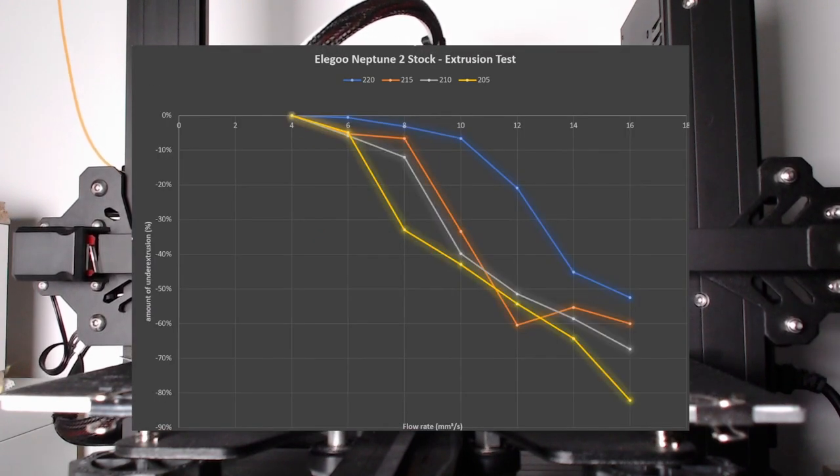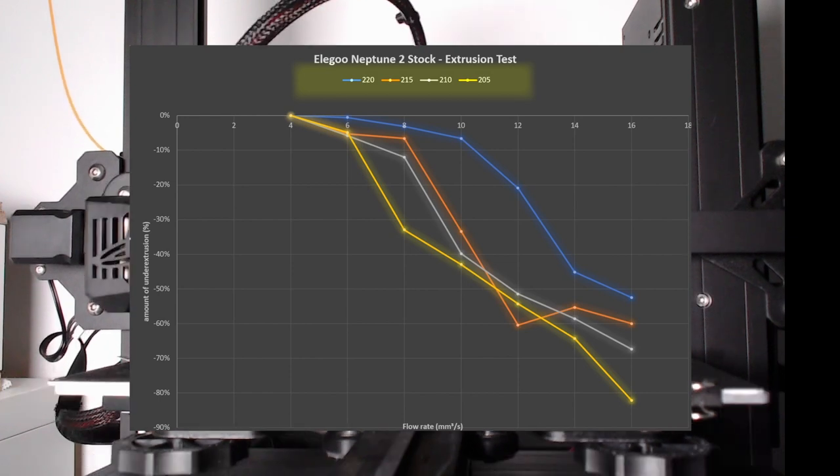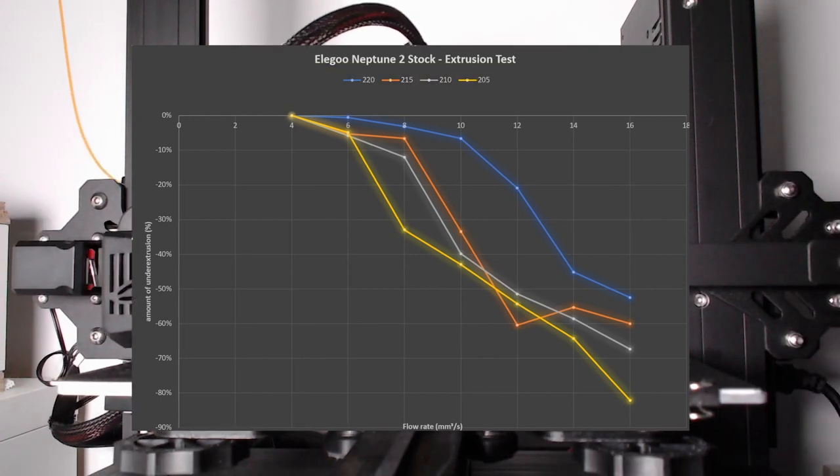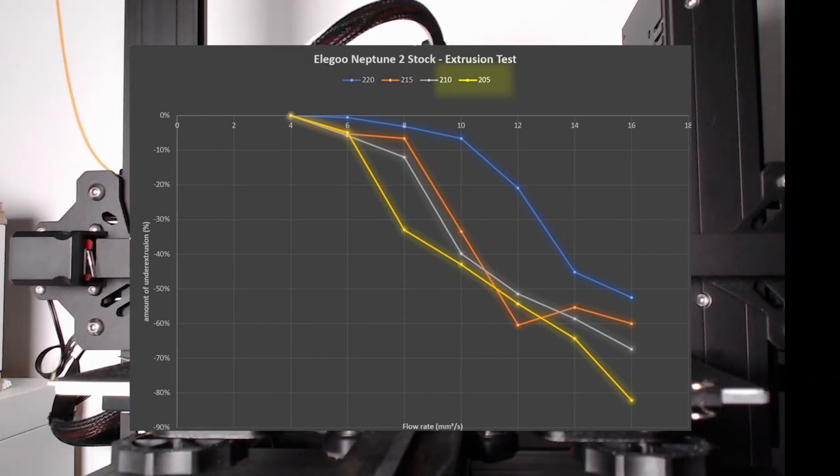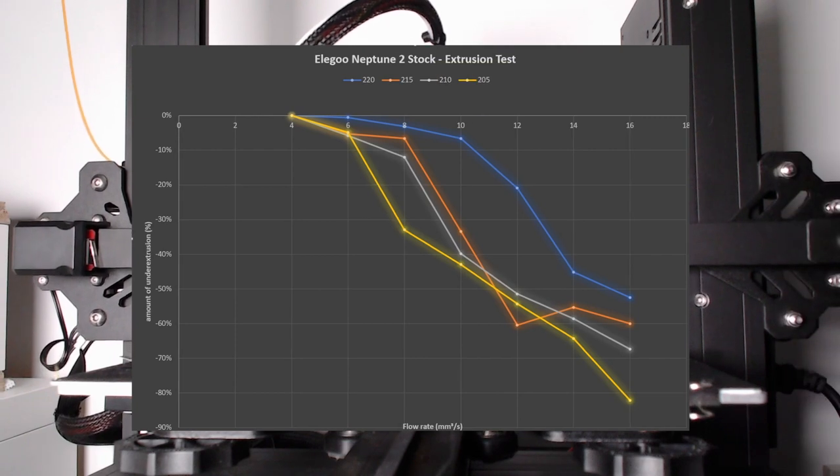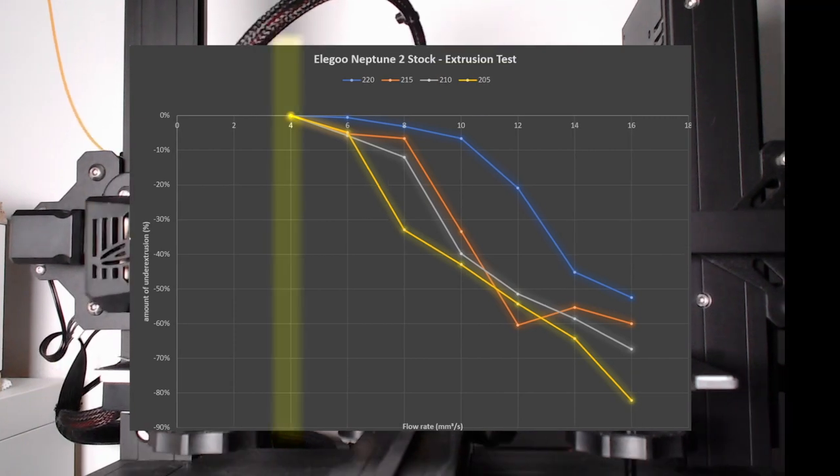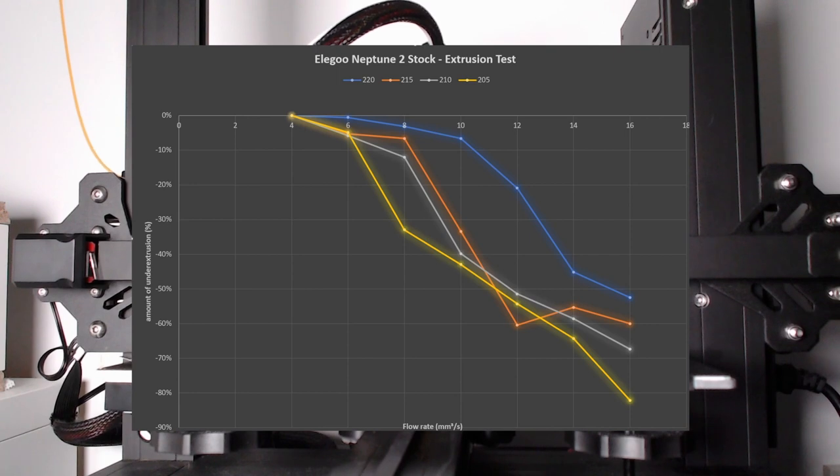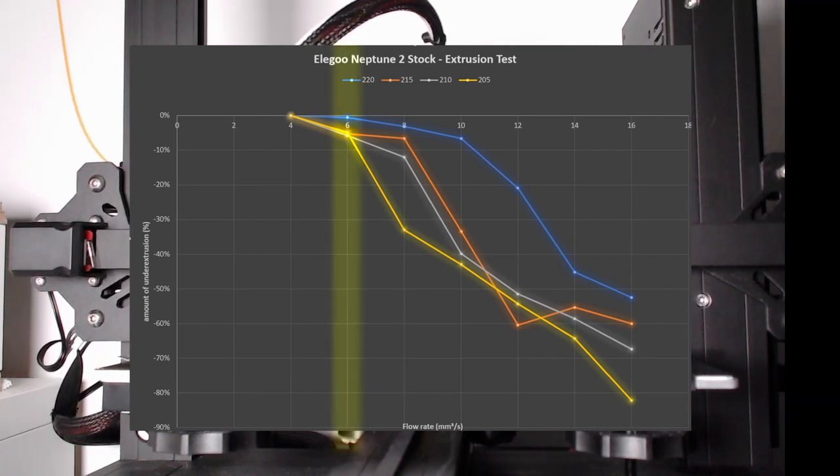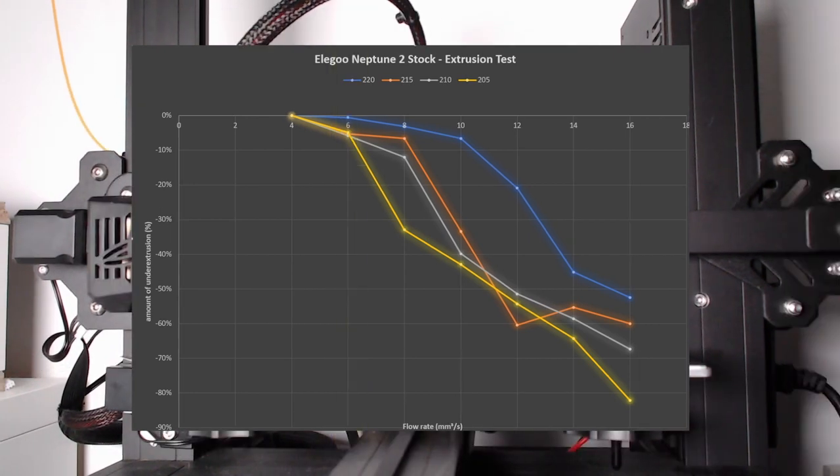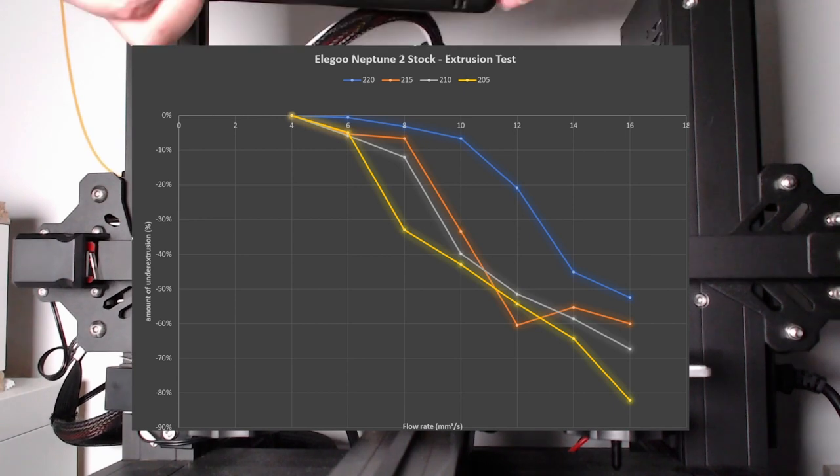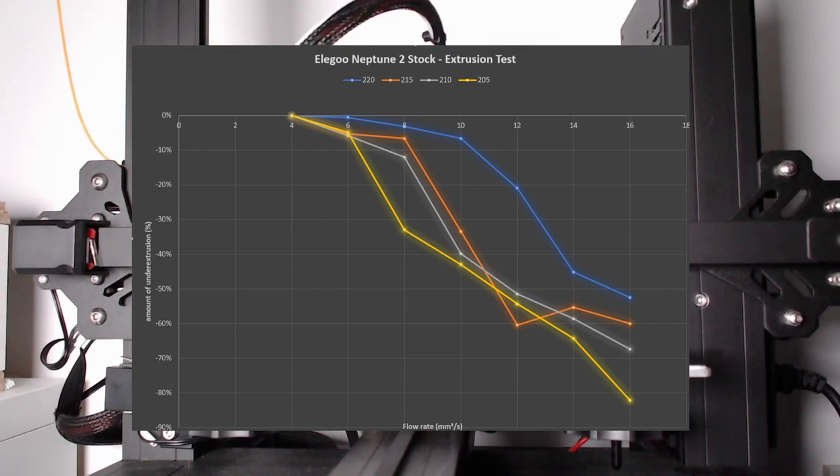The second diagram shows the amount of under-extrusion for the different temperatures used. It's clearly visible that printing at 205 degrees Celsius, which is common for PLA slicer profiles, there's no problem printing at 4 cubic millimeters per second. And with a slight amount of about 5% under-extrusion, 6 cubic millimeters per second might still work. Now it's time to start solving all mentioned problems one by one.